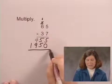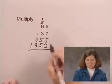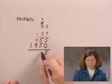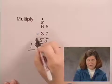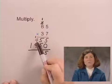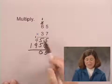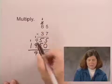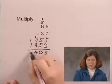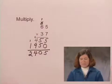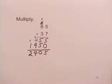Now I need to add the results. 5 plus 0 is 5. 5 plus 5 is 10, writing a 0 and a 1 above the 4. 1 plus 4 is 5, plus 9 is 14. And 1 plus 1 is 2. So 65 times 37 is 2,405.